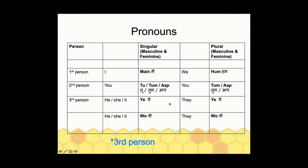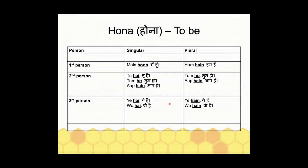To address the third person — it can be a person or an object — we use 'ye' and 'wo.' In both singular and plural cases we say 'ye' or 'wo.' The difference is based on proximity: if something or somebody is near you, you say 'ye,' but if something or somebody is far from you, you say 'wo.' To differentiate between singular and plural 'ye'/'wo,' the answer is simple — it depends on the verb form used.